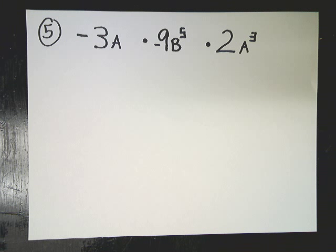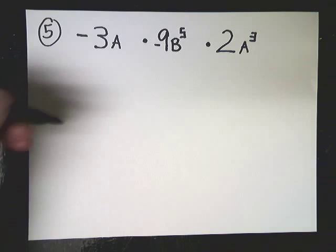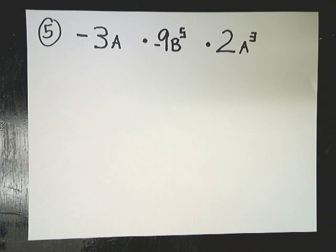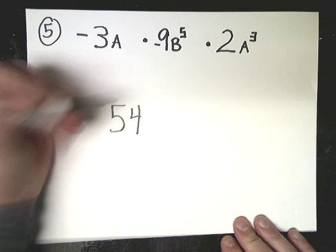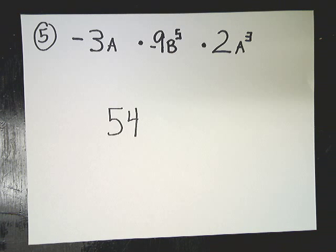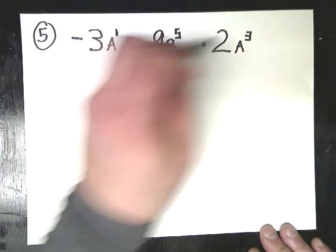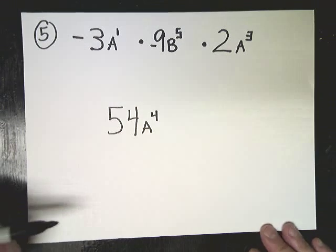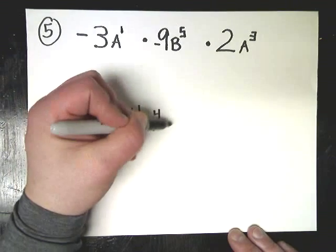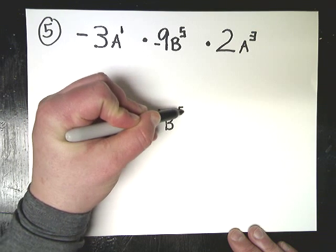And the last one. Same thing here. Just multiply the numbers. Negative 3 times negative 9, which would make positive 27 times 2, which is 54. The real issue here is that you have variable A and variable B. Now those are not like terms. So we don't combine them in any way. You just want to make some statement about what the A's are doing. So this is A to the 1st power. I multiply the numbers, I add the exponents. So I do 1 plus 3, A to the 4th. And then B, there's no other B variable there, so you'll just put B to the 5th power.